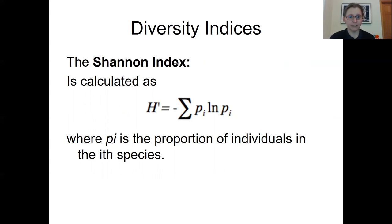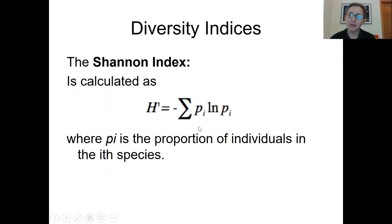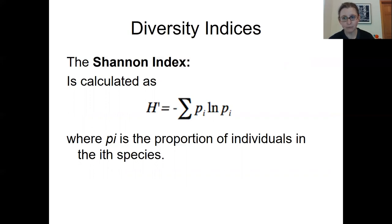The most commonly reported diversity index is called the Shannon index. The equation has a negative sign — you calculate the sum of the proportional abundance of each species observed times the natural log of that proportional abundance. You make that calculation and add it up for every species observed, getting a total that tends to be a negative number. You then multiply by negative one to get a positive number. The Shannon index thus contains information about both species richness and relative abundance.